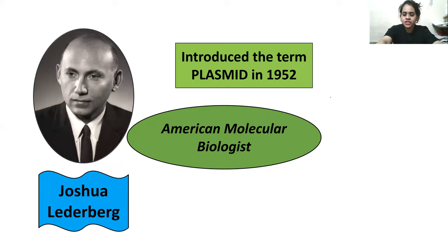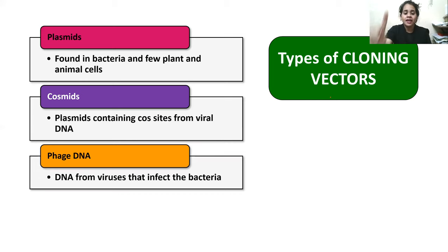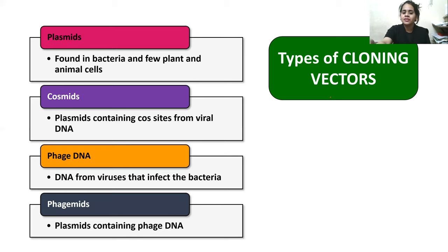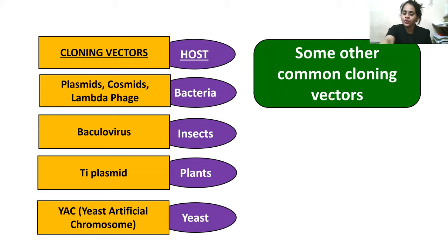There are a few types of cloning vectors. Plasmids are found in bacteria and a few plant and animal cells. Cosmids are plasmids containing cos sites from viral DNA. Phage DNA refers to DNA from viruses that infect bacteria. For bacterial hosts, you can use plasmid, cosmid, or lambda phage. For insect hosts, use baculovirus. For plant hosts, use Ti plasmid. For yeast, use yeast artificial chromosome (YAC).